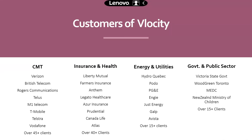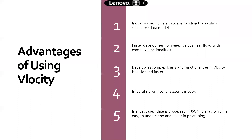These are a few customers of Velocity currently using it. In CMT particularly, there are Verizon, Rogers Communication, British Telecom, TELUS — Vodafone has recently started. In insurance there are quite a few clients, and even in the government sector — New Zealand, Canada, and parts of US — certain state governments are using these domains. Let's see why they are all using Velocity and why not just simply go for Salesforce.